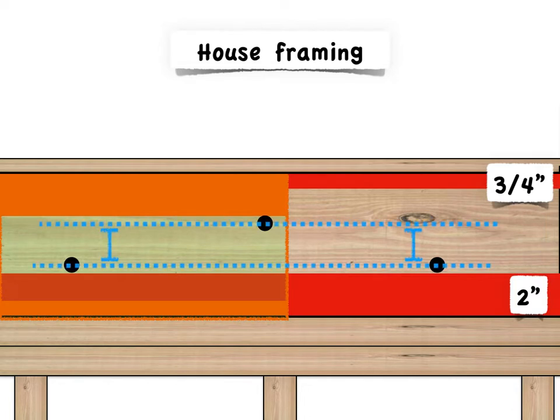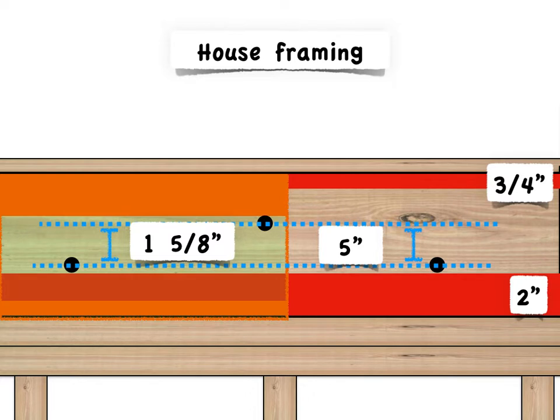But there are limits to the vertical height of this stagger. The stagger between the lower and upper fastener can be no less than one and five-eighths inch vertical distance and no more than five inches between them.